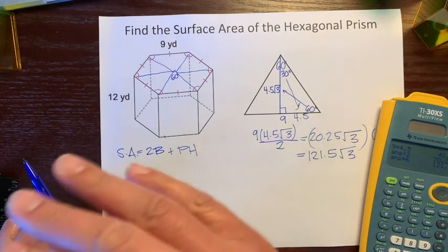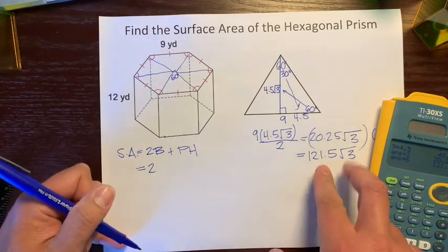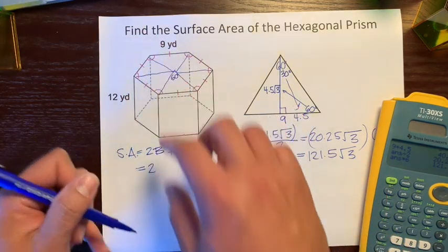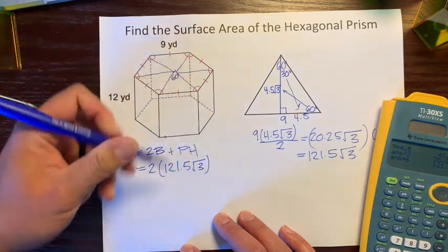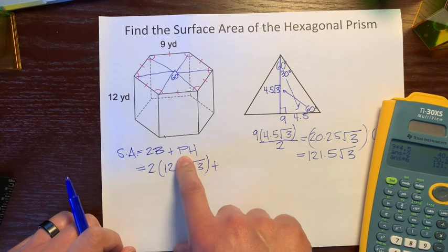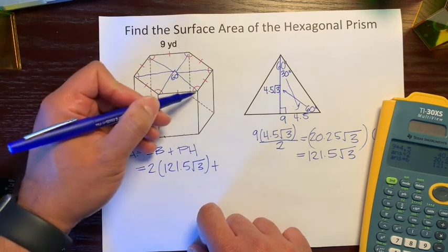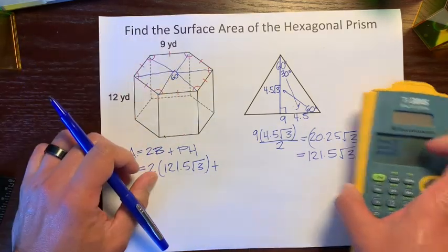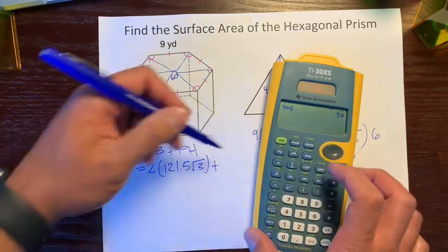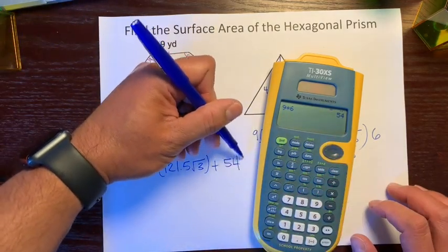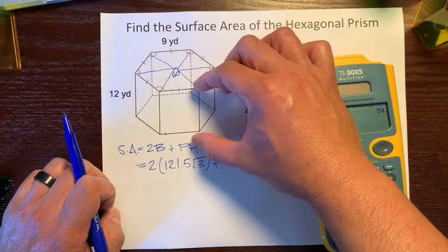Now let's plug that into our surface area formula. We have 2 times the base area, so 2 times 121.5√3. For P — the base perimeter — every side of the hexagon is 9 and there are 6 sides, so 9 times 6 is 54. That's the base perimeter. Then we multiply by h, the distance between the two bases.